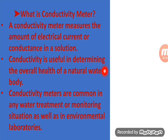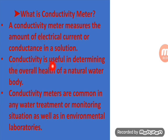What is a conductivity meter? A conductivity meter measures the amount of electrical current or conductance in a solution. Conductivity is useful in determining the overall health of a natural water body — whether there is any electrical conductance present in the water. That instrument is called a conductivity meter. Conductivity meters are commonly found in water treatment or monitoring situations as well as in environmental laboratories.